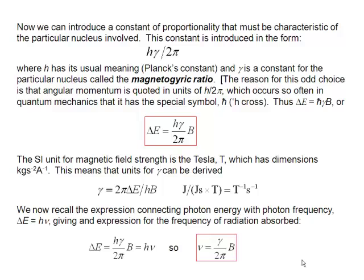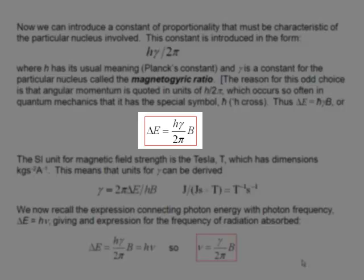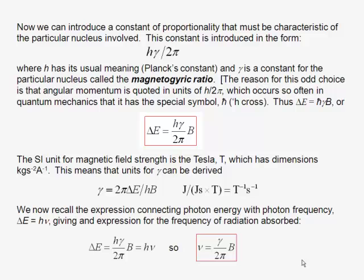So we know that delta E is proportional to B. We would like to have a constant of proportionality in there. We call it h gamma divided by 2 pi. The characteristic constant, the thing that's characteristic of the hydrogen nucleus in there, is this parameter gamma, the magnetogyric ratio. And it's a constant which is a characteristic of a particular nucleus. So we can write our delta E as being h cross gamma B, or to put it in the long form, delta E equals h gamma over 2 pi times the applied field strength B.